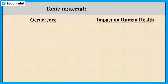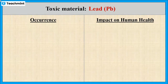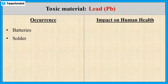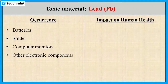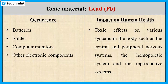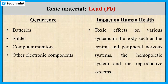The first material is lead. It is most commonly used metal in the electrical and electronic industry, such as batteries, solder, computer monitors, etc. The short-term exposure to high levels of lead can cause vomiting, convulsions or coma. High exposure may affect the central and peripheral nervous systems and the reproductive systems.